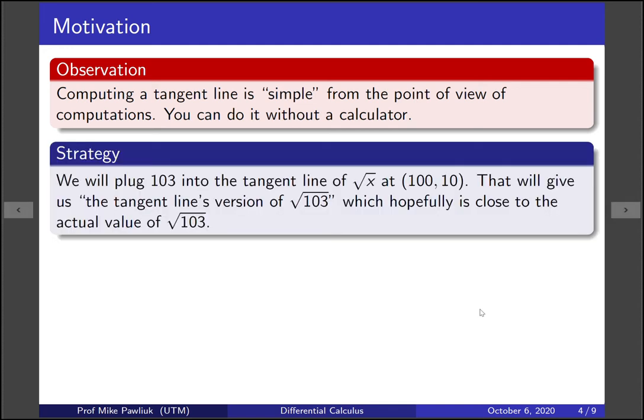Now our strategy is we're going to plug in 103 not into the square root function but into the tangent line of the square root function. So if you plug in 103 into the tangent line you're hopefully going to get a value that's close to the actual value of the square root 103. Now what does this actually look like in a picture? I think that explains most of it.